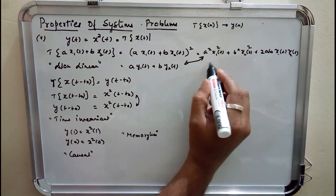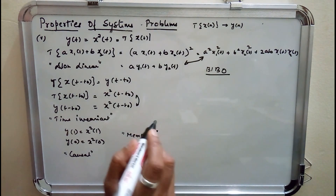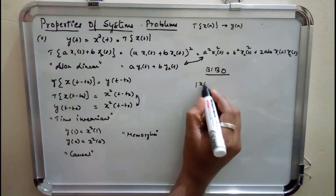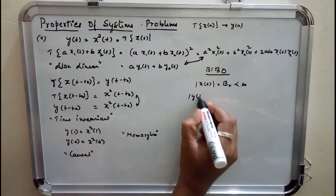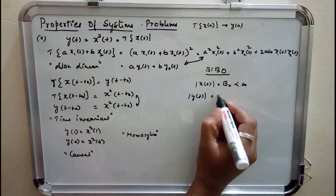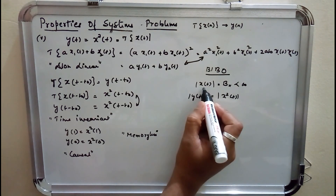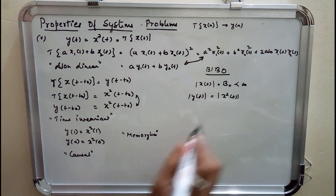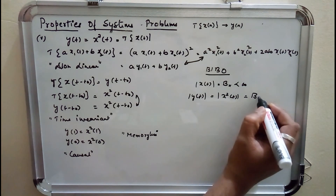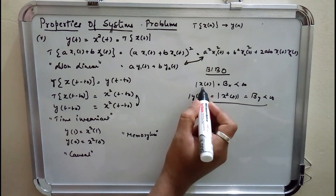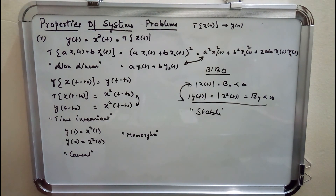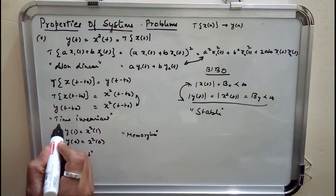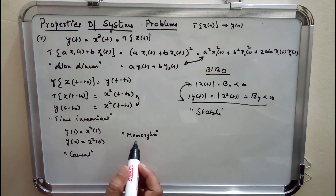The last property is stability — BIBO stability. Bounding the input means x(t) is less than infinity. Checking the output: |y(t)| = |x²(t)|. Since x(t) is less than infinity, obviously x²(t) should also be less than infinity — so output is bounded by some value b_y less than infinity. For a bounded input we get bounded output, hence the system is stable. Summary: y(t) = x²(t) is nonlinear, time invariant, causal, memoryless, and stable.